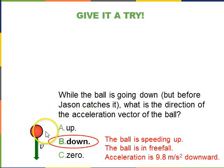And hopefully you got it down. This ball is now speeding up on the way down, so the velocity and the acceleration vectors are in the same direction. And once again, the ball is in free fall, so the acceleration has to be 9.8 meters per second squared downwards.